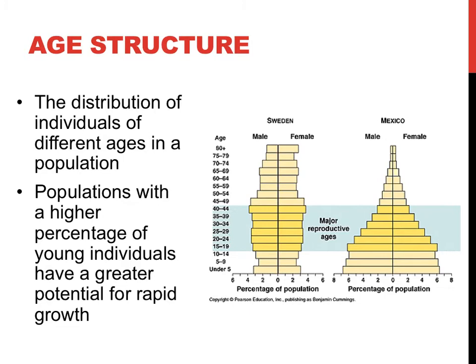Countries like China, with a very large population growth, and Russia, with a very low population growth, have instated policies to try to slow down or speed up population growth. China has its one-child laws, while Russia has had national holidays with prizes if parents have children on specific dates.